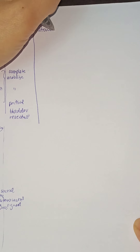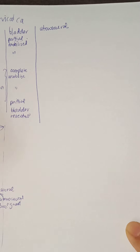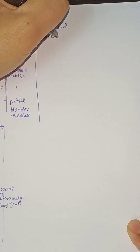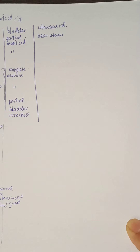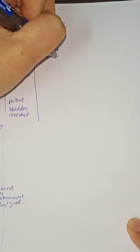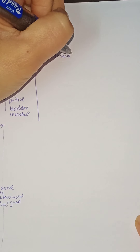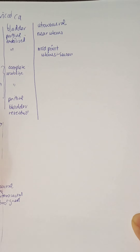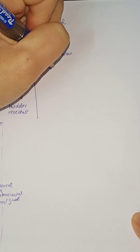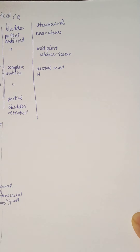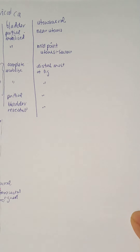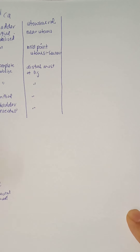What about the back — the uterosacral ligament? For Type 1, it is only cut at the proximal part, near the uterus. For Modified Radical, it is cut at the midpoint between the uterus and the sacrum. As we go more lateral and radical, we go to the distal end of the ligament. For Extended Radical and Exenteration, basically everything is truncated.